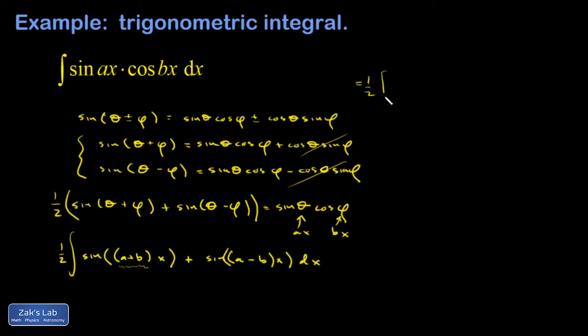So when I write my final answer, it's like a one-half, one over a plus b, cosine a plus b times x. There's a minus sign as well. So when I differentiate this, I will get back what I started with. Second term, also negative.